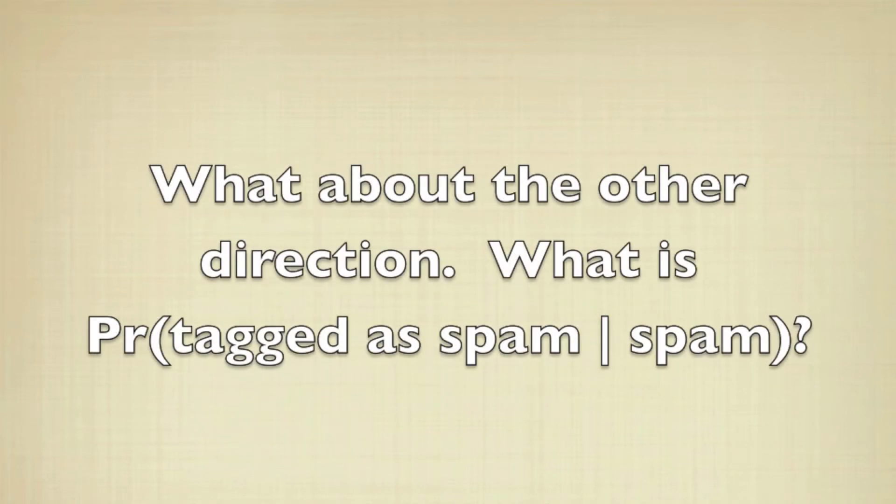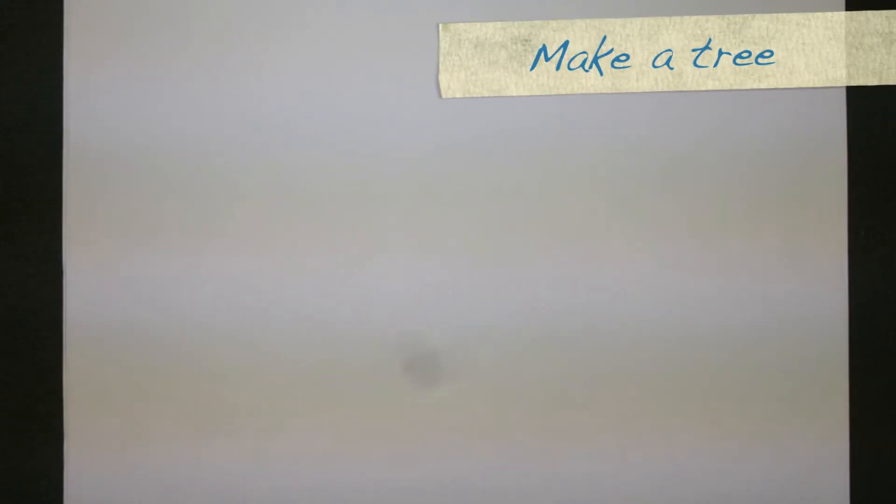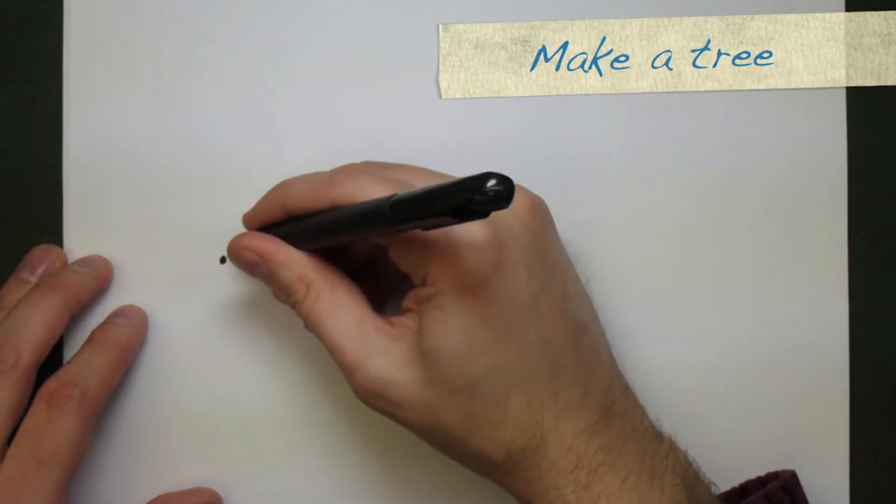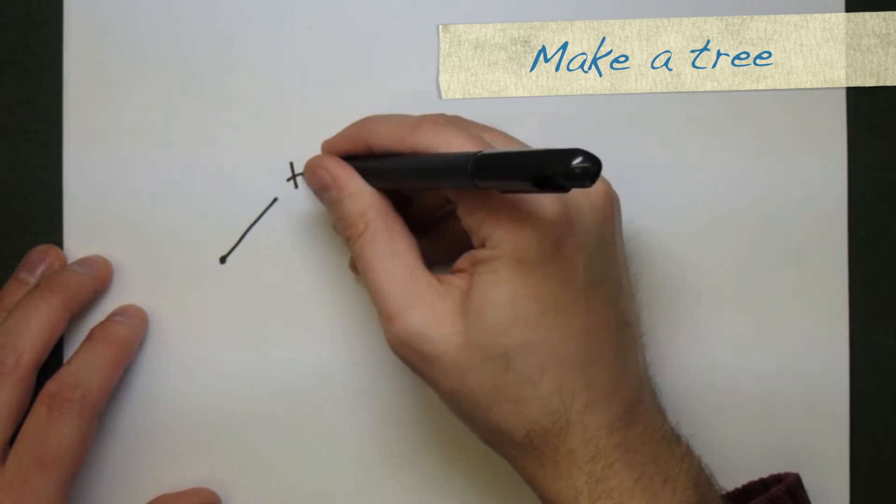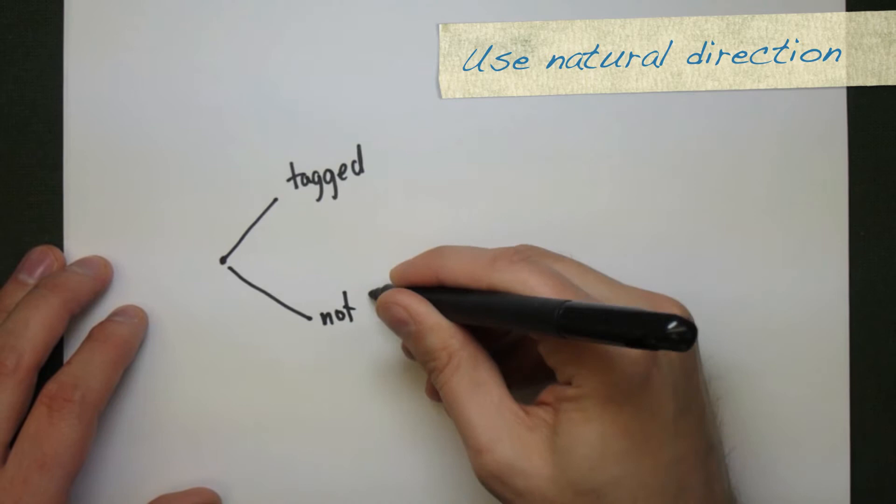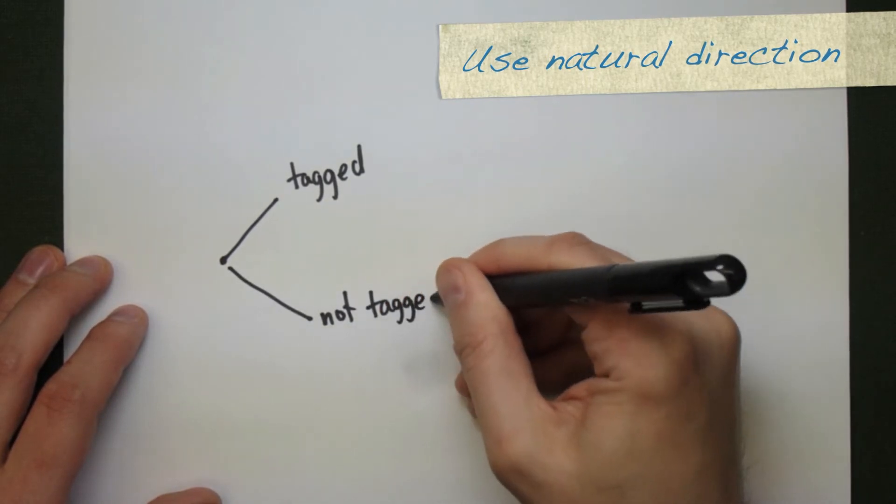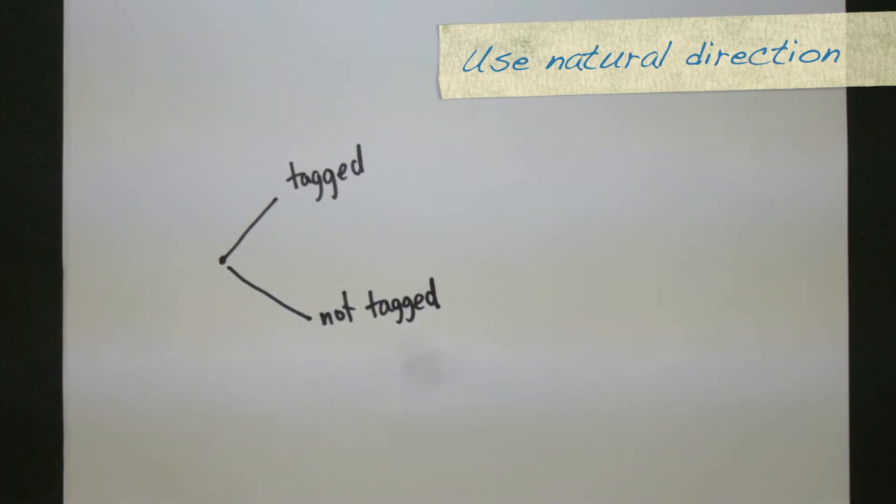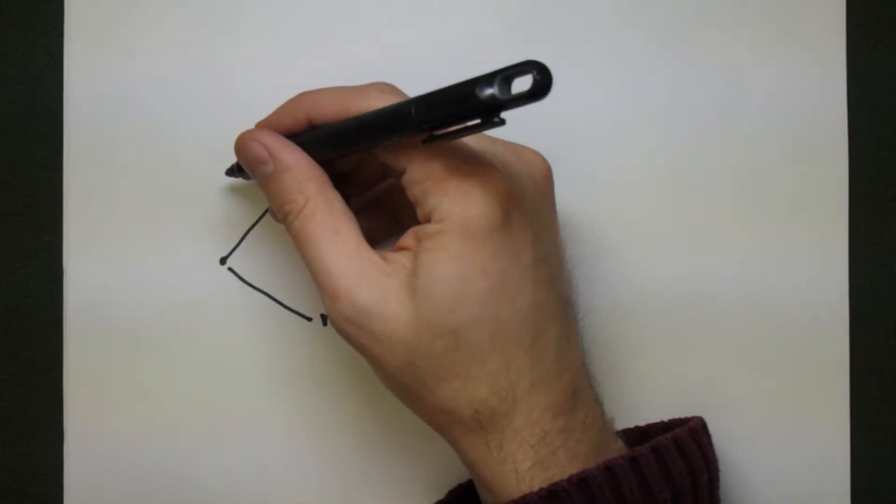But what about something like this? What is the probability that a message was tagged as spam given that it's actually spam? We're going to approach this by making a tree. The first branches are going to be whether or not an email was tagged as spam or wasn't tagged as spam. I have all the information about how many messages actually made it to my inbox, and so we can use this as our first branches for the tree.